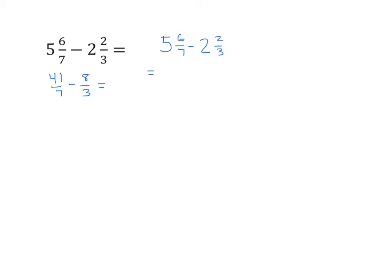Okay, we're going to subtract 5 minus 2, and we get 3. So now I have 3 and 6 sevenths minus 2 thirds. We've eliminated one of our mixed numbers.